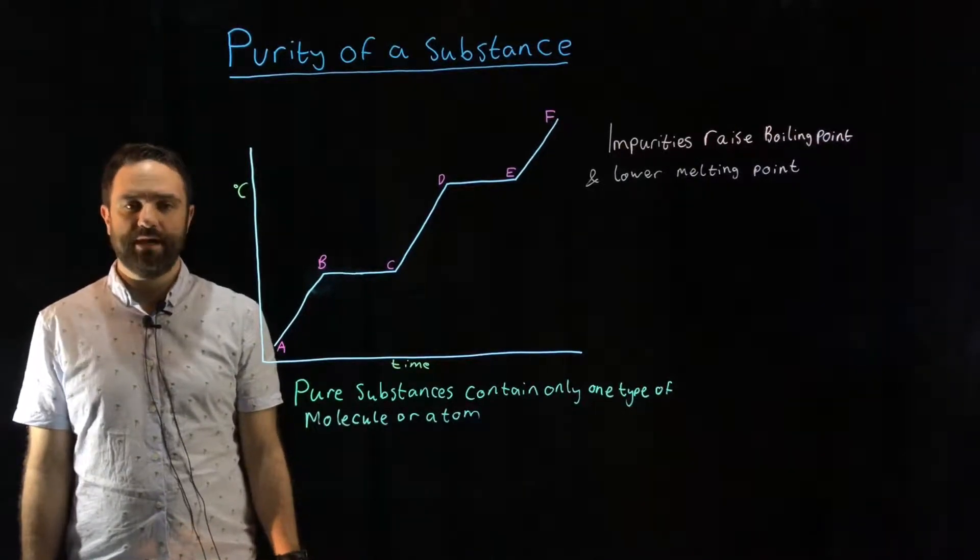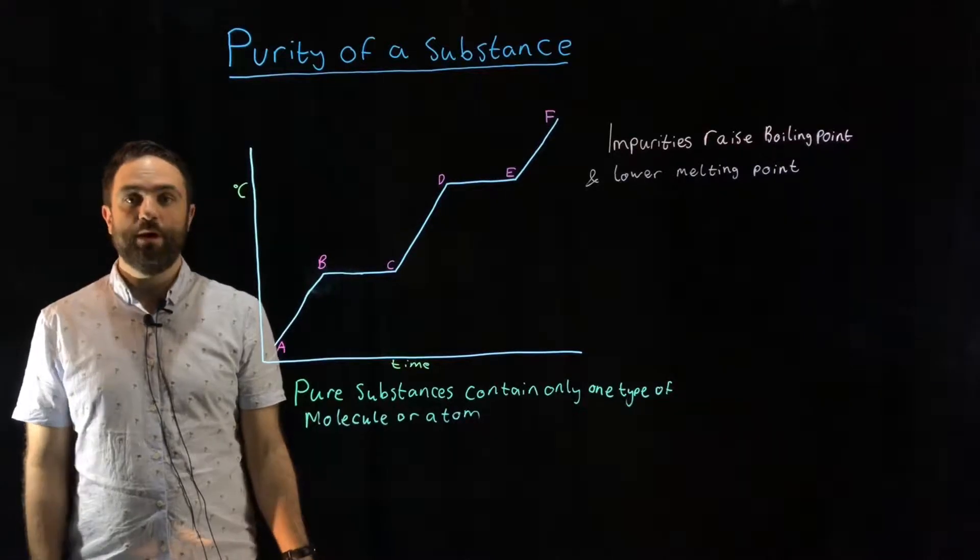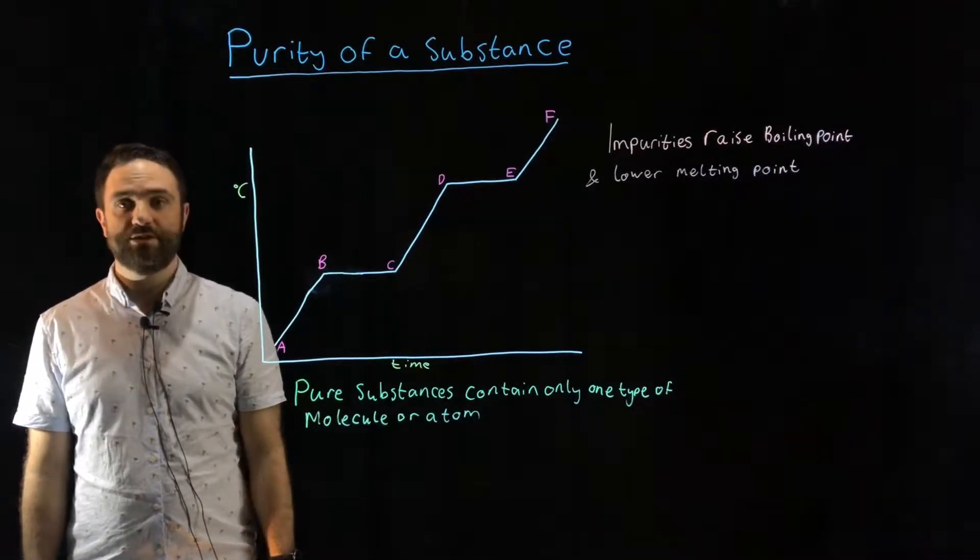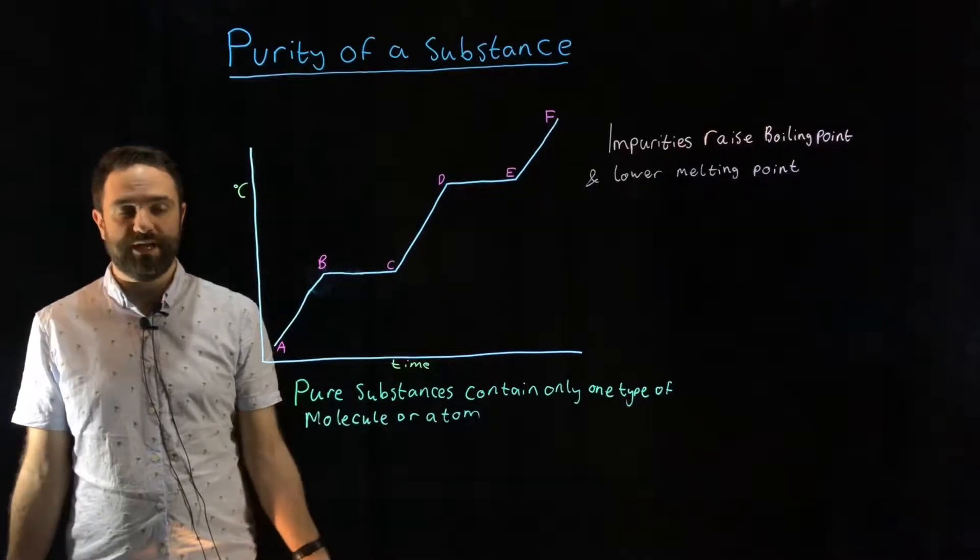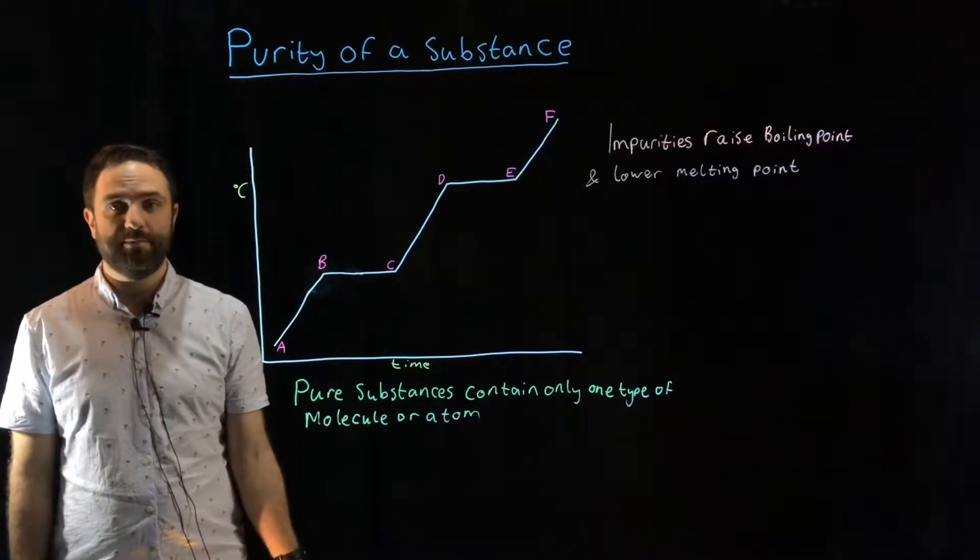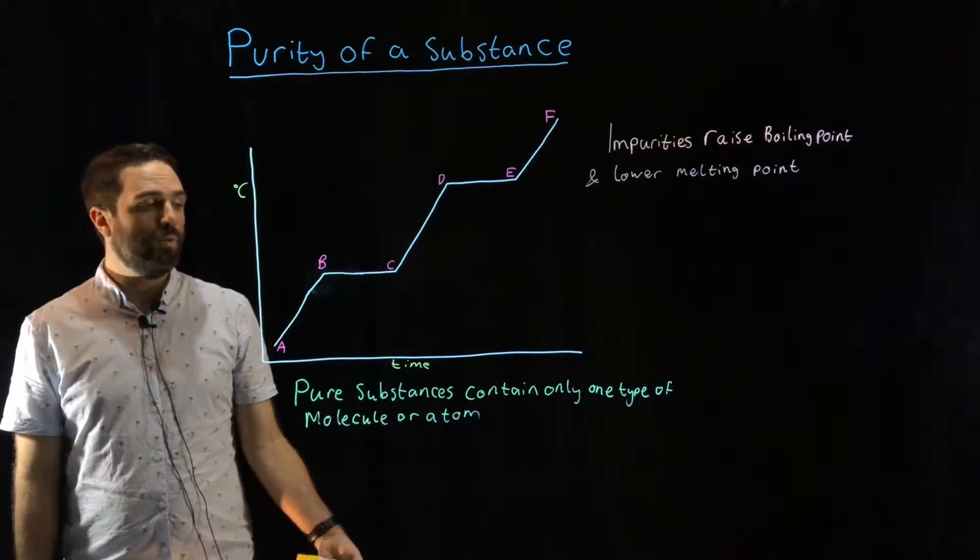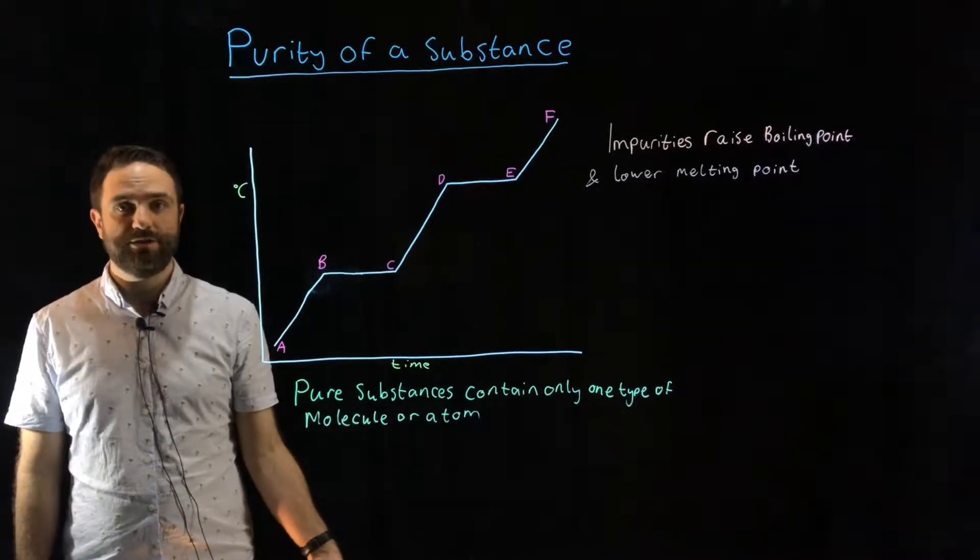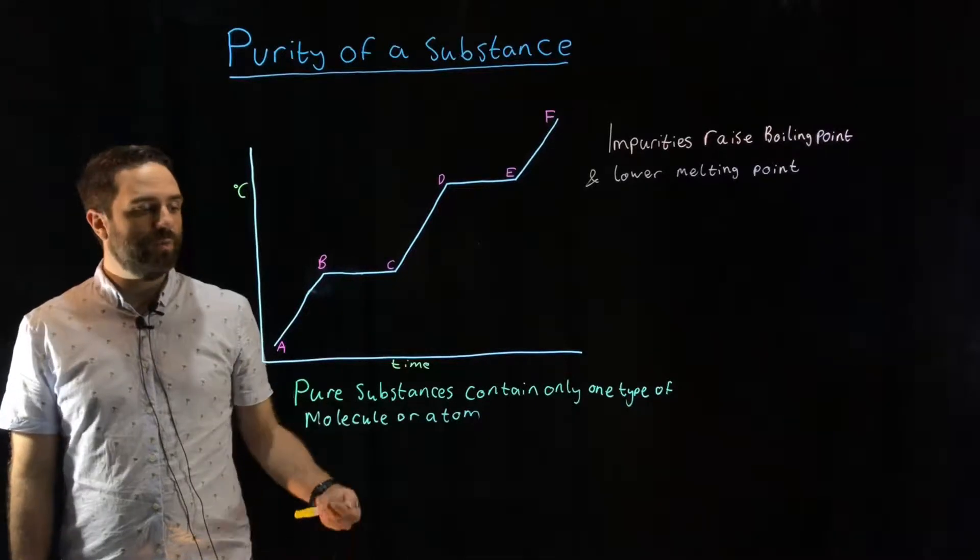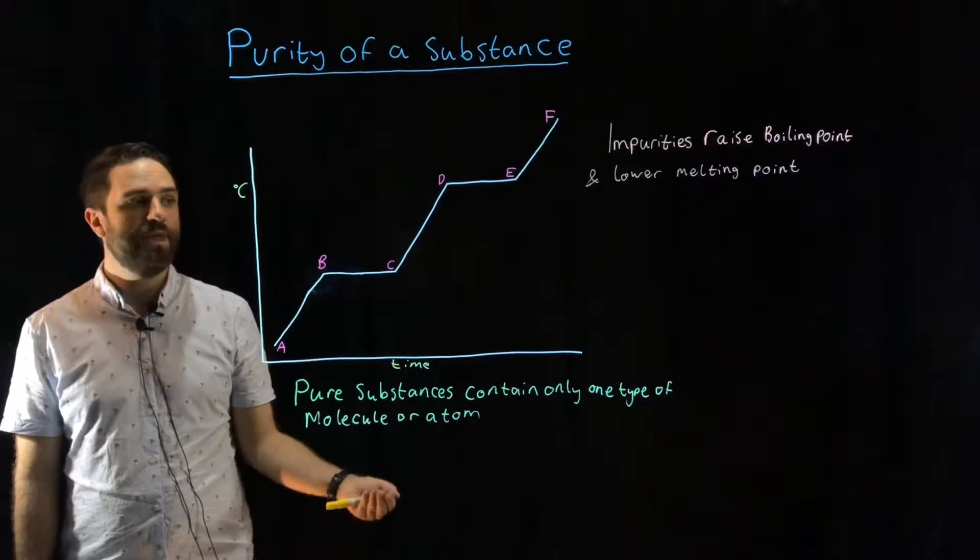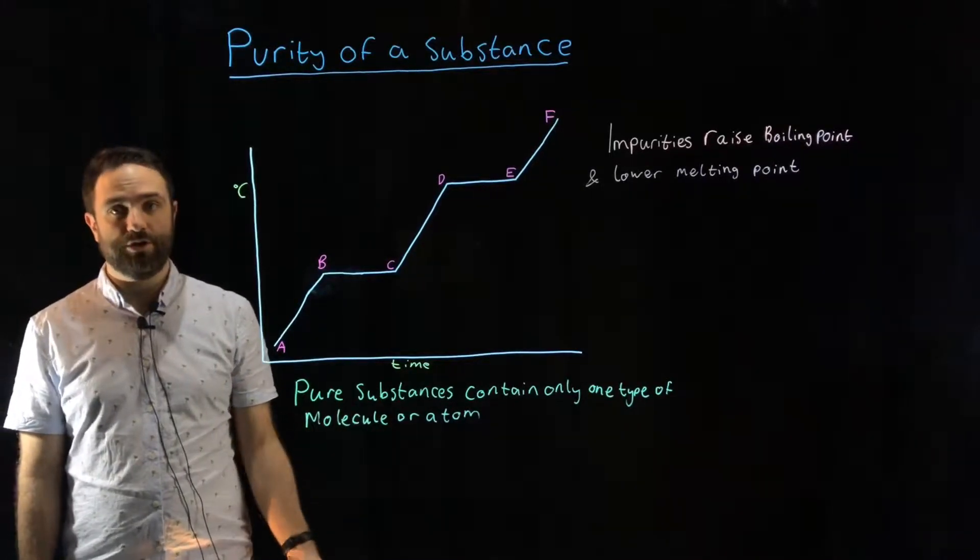So how can we tell if something is impure or pure? Well, there is a simple laboratory test. What we can do is take a solid sample of the substance, or if that's not practical, start with a liquid sample, and we measure its temperature while supplying a constant supply of heat. So we will heat it up, measure its temperature every 30 seconds, minute, two minutes, and then we will plot the results on a graph.